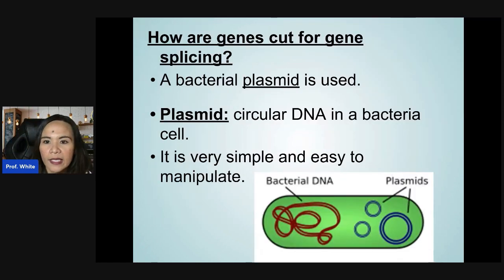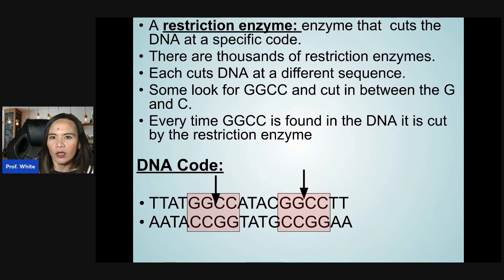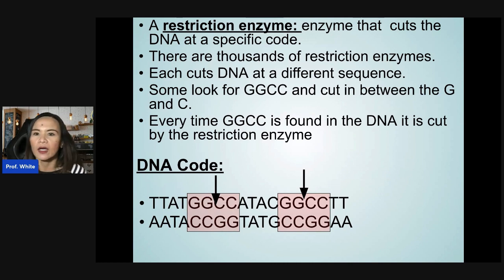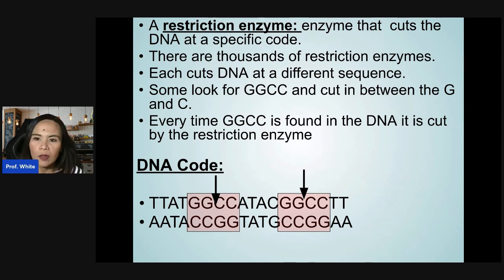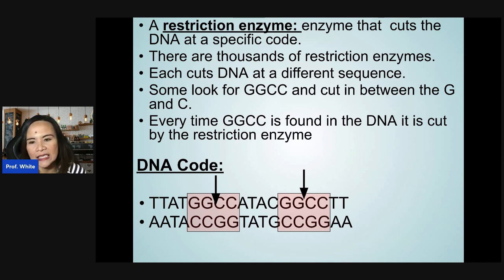How are genes cut for gene splicing? A bacterial plasmid is used — a plasmid is a circular DNA in a bacterial cell that is simple and easy to manipulate. Restriction enzymes are enzymes that cut DNA at a specific sequence code. There are thousands of restriction enzymes, each cutting DNA at a different sequence. For example, some look for the sequence GGCC and cut between the G and C, so every time GGCC appears in the DNA, it is cut by the restriction enzyme.